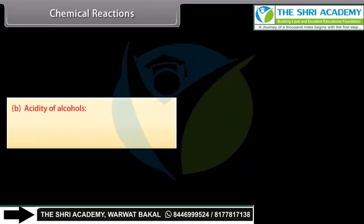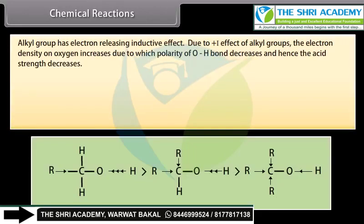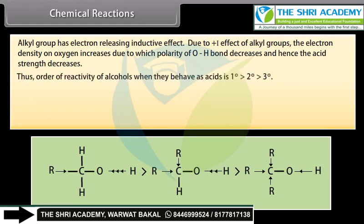The acidic character of alcohols is due to the presence of polar nature of OH bond. Alkyl group has electron releasing inductive effect. Due to the plus I effect of alkyl groups, the electron density on oxygen increases, due to which polarity of OH bond decreases and hence the acid strength decreases. Thus, order of reactivity of alcohols when they behave as acids is primary alcohol followed by secondary and tertiary alcohol.